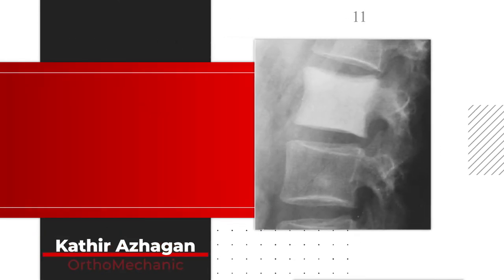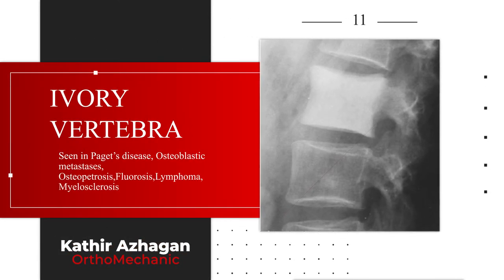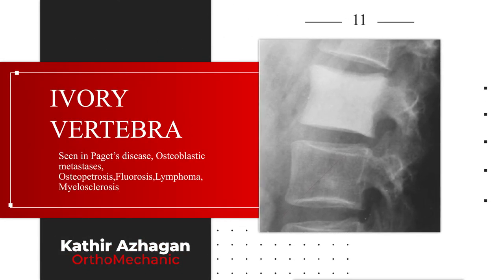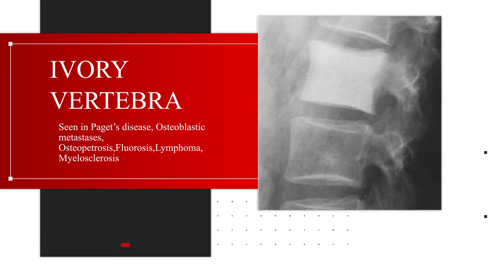Ivory vertebra is a uniformly radio-opaque vertebral body seen with diseases like Paget's disease, osteoblastic metastasis, and osteopetrosis. It can also be seen with fluorosis, lymphoma, and myelosclerosis.